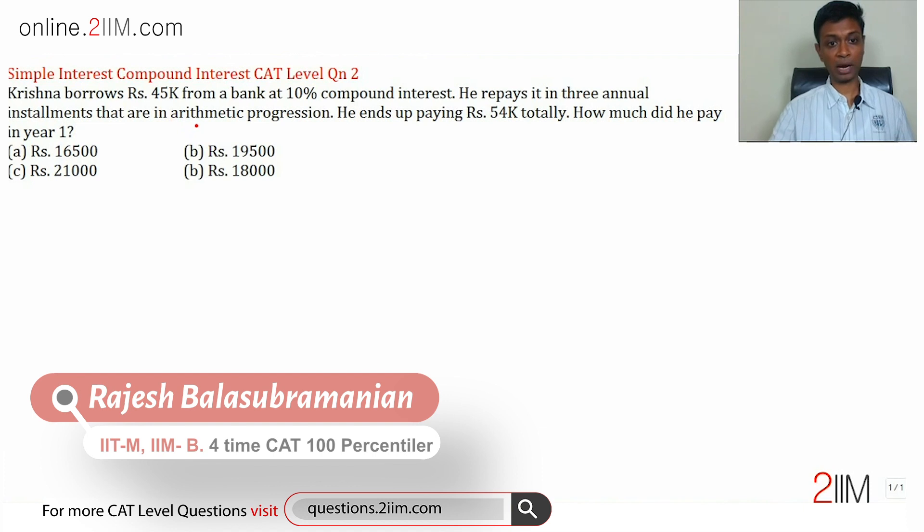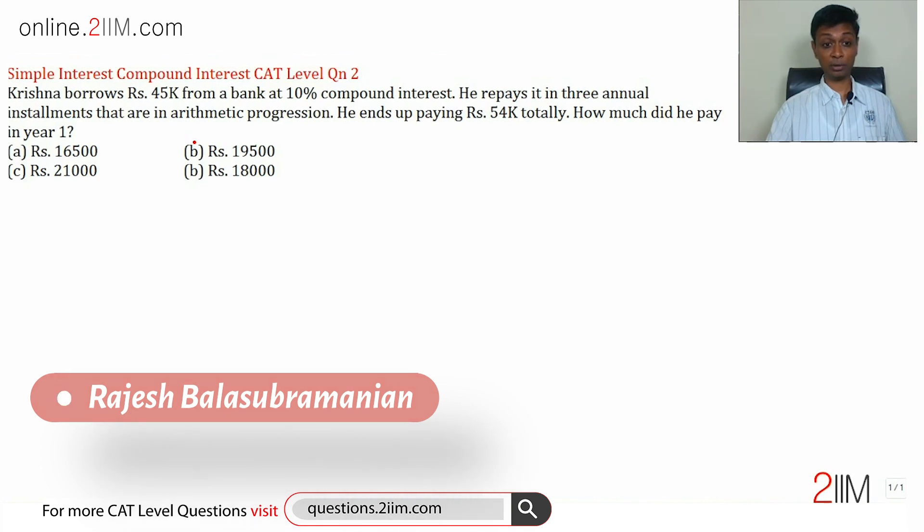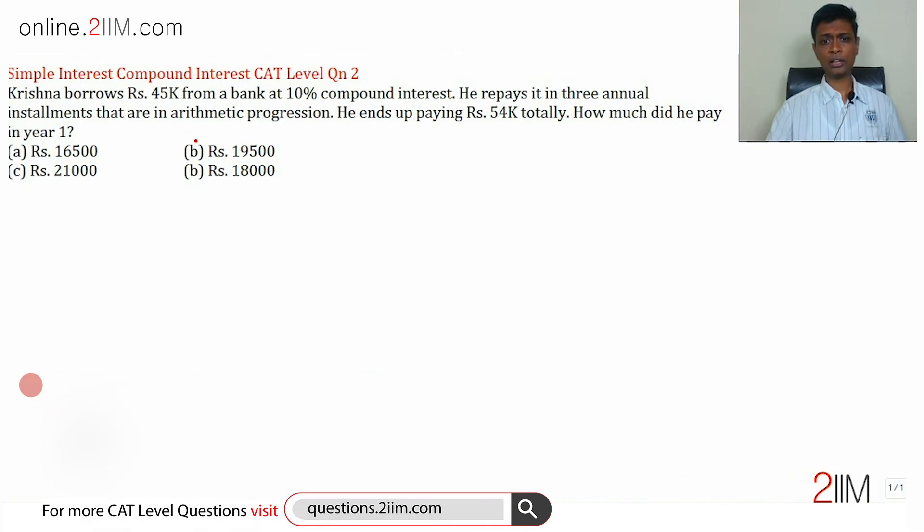Krishna borrows Rs. 45,000 from a bank at 10% compound interest. He repays it in three annual installments that are in arithmetic progression. He ends up paying Rs. 54,000 total. How much did he pay in year one? This sounds like there's an AP idea involved, compound interest, and different installments.